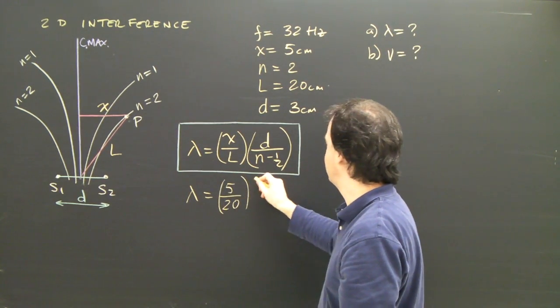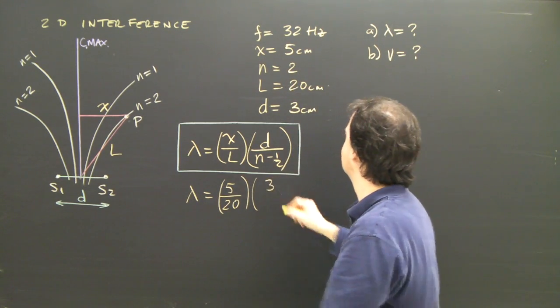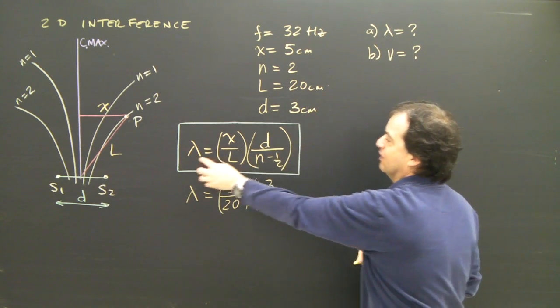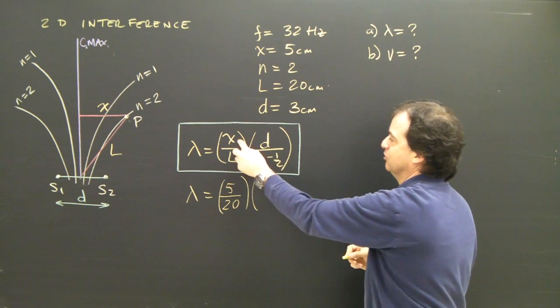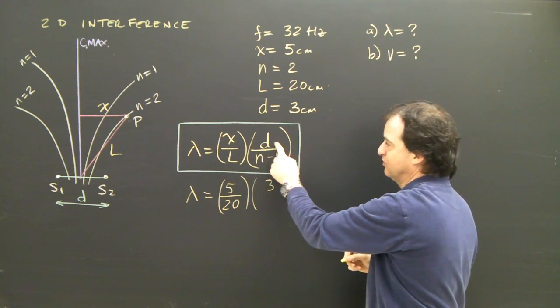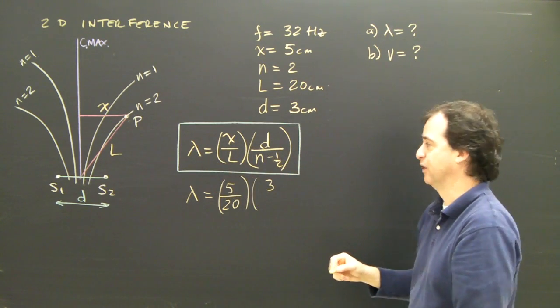Then I put D. The distance D is 3. Since that's centimeters, then lambda is going to end up being centimeters because the units here cancel out. The units of D will end up being the units of lambda.